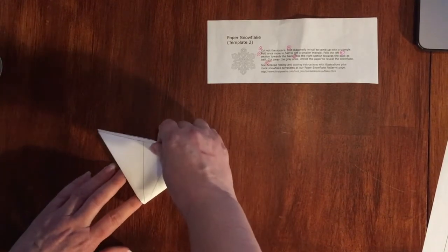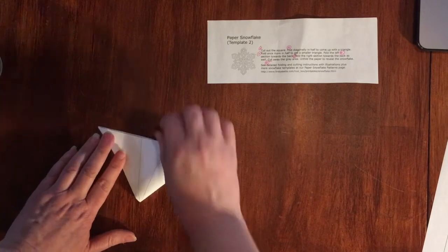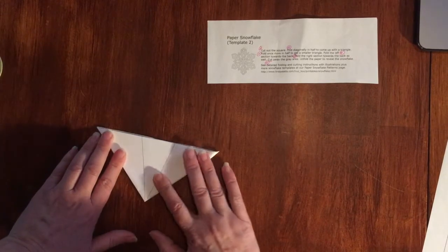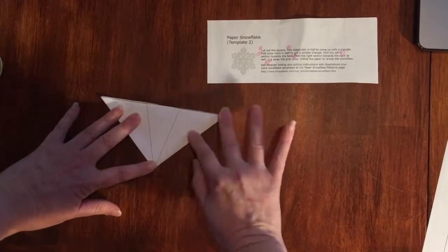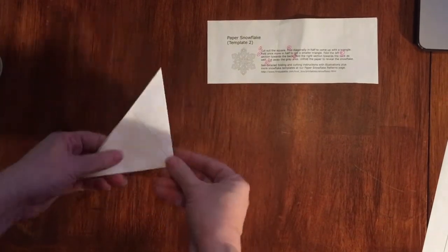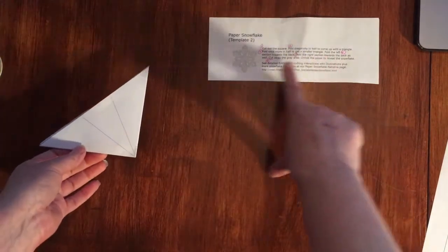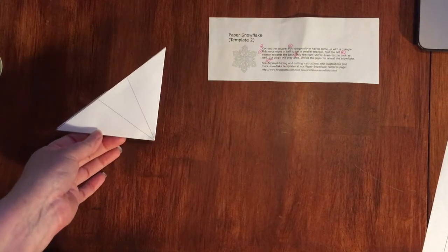Folding in a way that I'm still able to see all those lines on the one side. Then it says fold the left section towards the back.